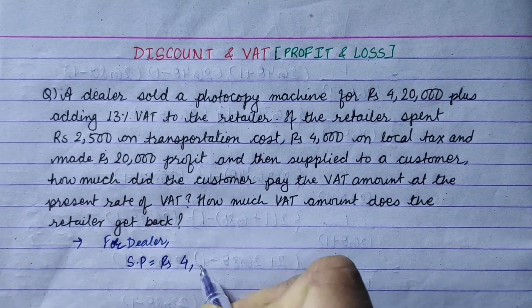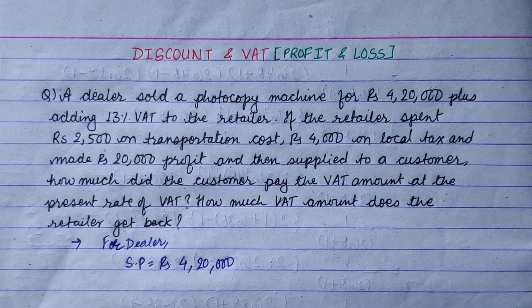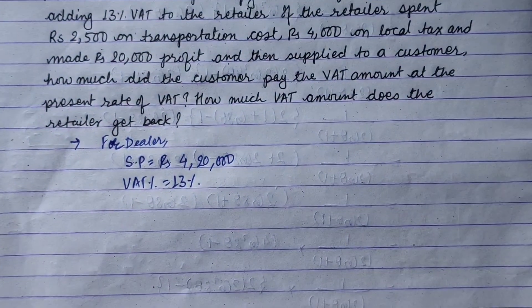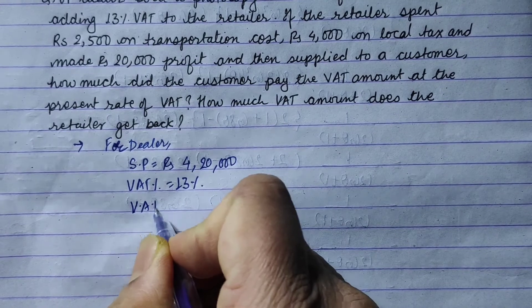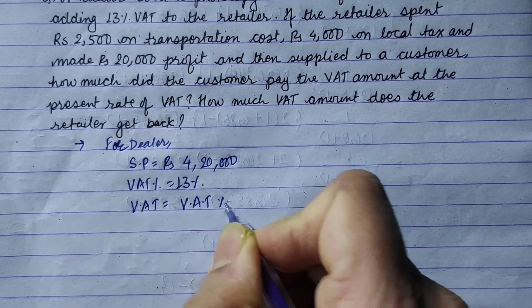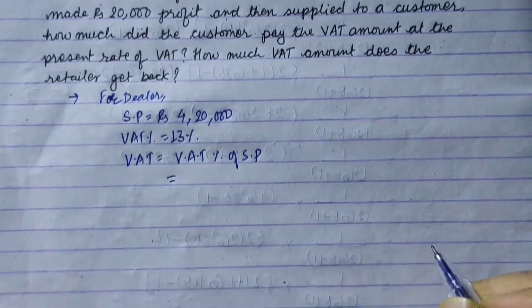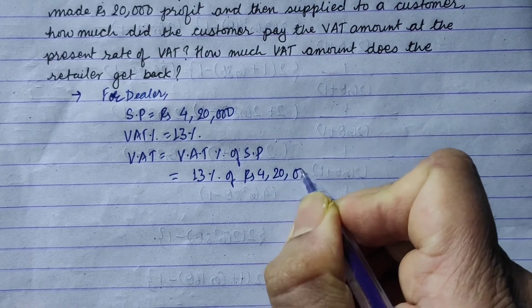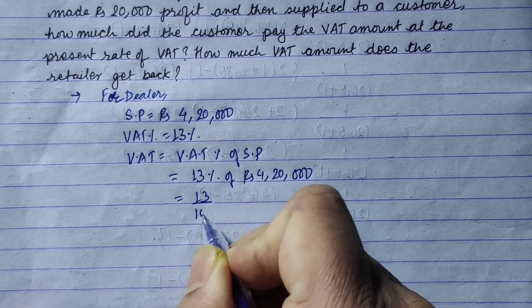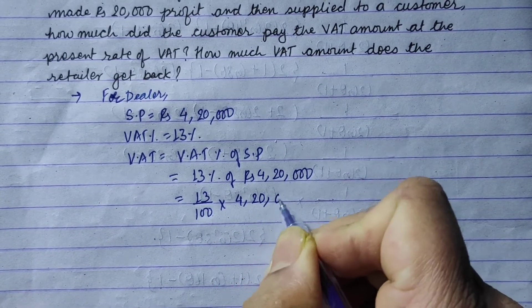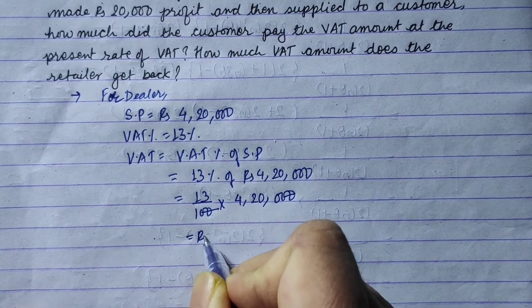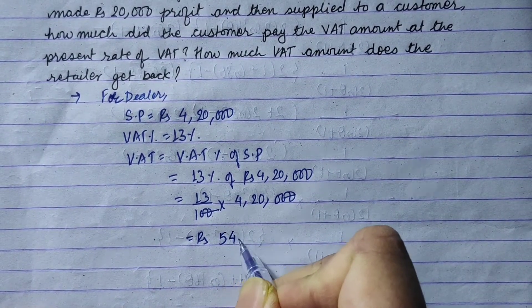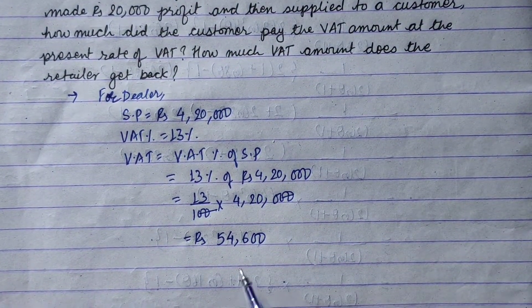For the dealer, the selling price is rupees 4,20,000. The VAT percent is 13 percent. So VAT amount equals 13 percent of rupees 4,20,000, that is 13 upon 100 into 4,20,000, which gives rupees 54,600.